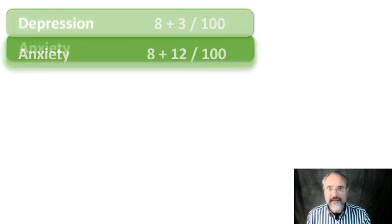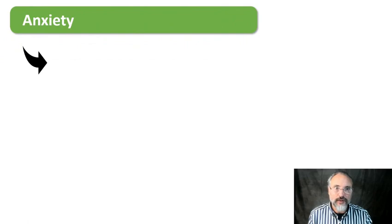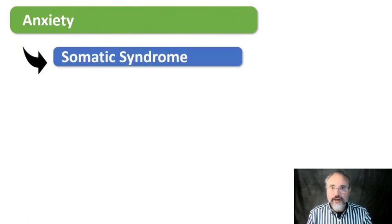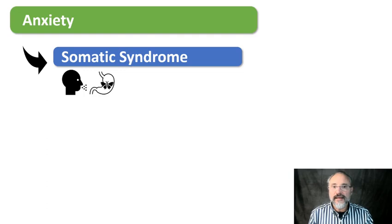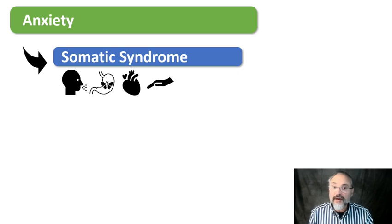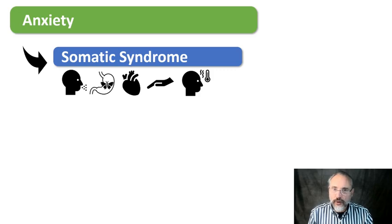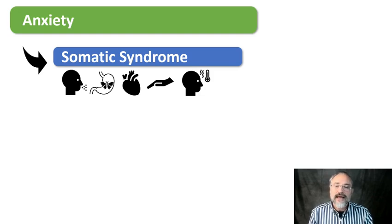Let's talk about anxiety. Anxiety is the other big mental health problem. The disorder of anxiety also has a somatic syndrome — symptoms to do with the body, usually the autonomic system. Those are over-breathing, a feeling of butterflies in the stomach, tachycardia, high blood pressure, tremors, a sense of being hot, and sweating, particularly in the hands. Those are nervous autonomic symptoms prevalent in anxiety.